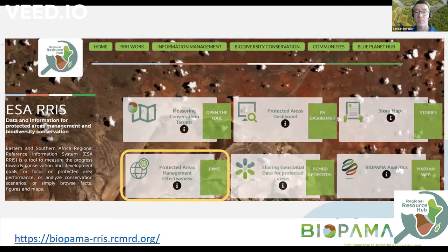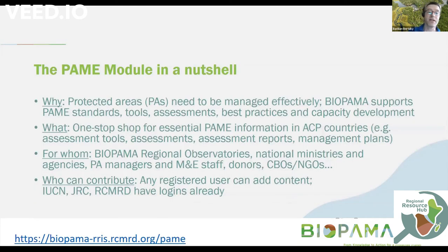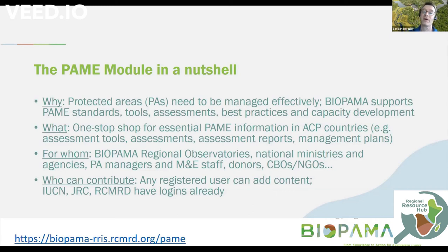Where do you find the Protected Area Management Effectiveness module? If you go to the homepage of the Eastern and Southern Africa Regional Reference Information System — Gugi shared the link in the chat — you will find a card called the Protected Area Management Effectiveness, and that takes you into the management effectiveness module. The module responds to the issue of managing protected areas effectively, supporting standards from the Green List to assessment tools, providing an overview of assessments already carried out, promoting best practices, and supporting capacity development. Our view is for this PALMI module to eventually be a one-stop shop for essential information for African, Caribbean, and Pacific countries.